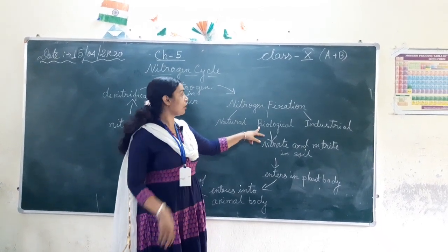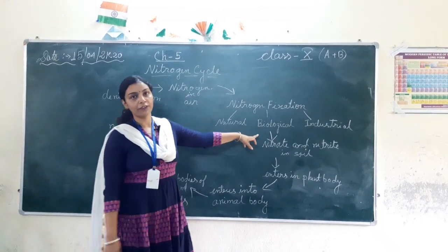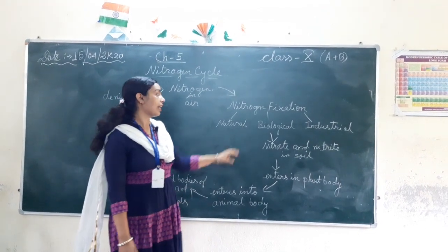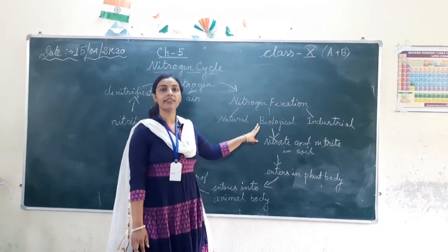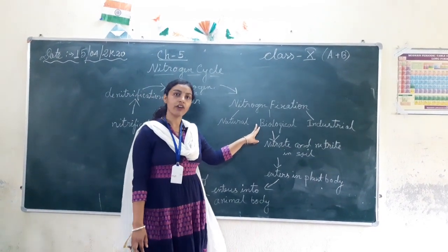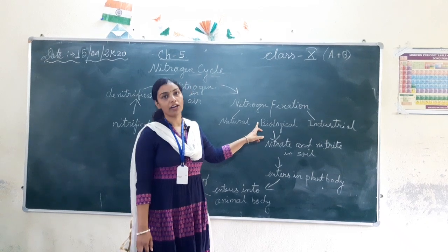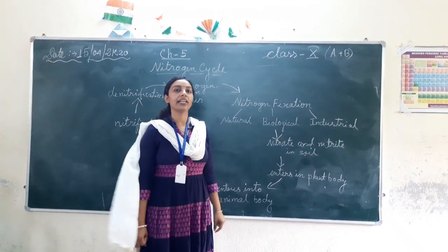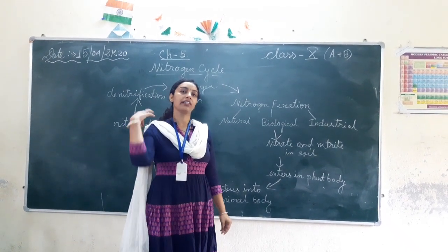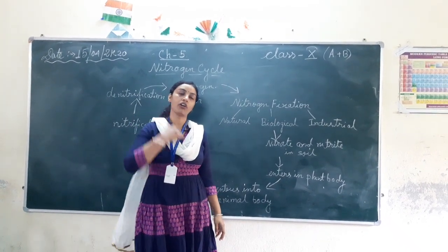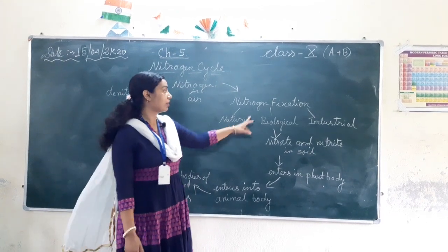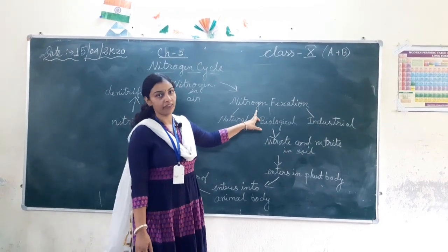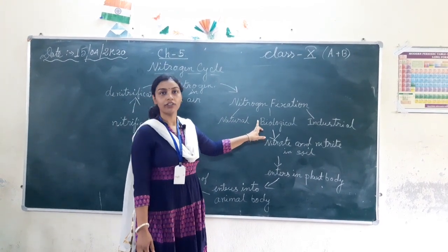After that, the biological process. In the biological process of nitrogen fixation, different types of bacteria — an array of bacteria — help in the biological process. The bacteria present in the root nodules of leguminous plants help to fix the nitrogen in the air into the soil.